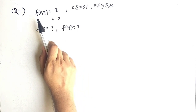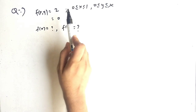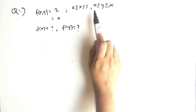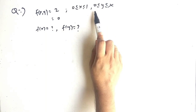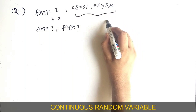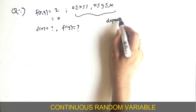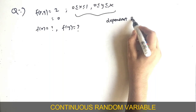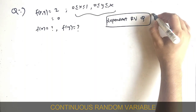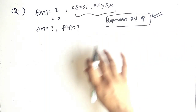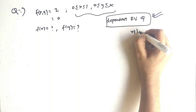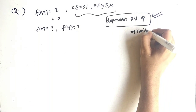Our first question is: f of x comma y is equal to 2, where x ranges from 0 to 1, and y ranges from 0 to x. You can clearly see that this is a dependent variable question. You should note this, because of this the formula changes — it deals with limits, and we will see how.